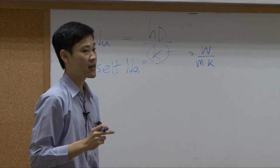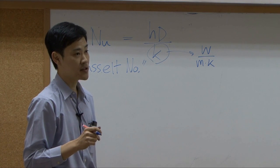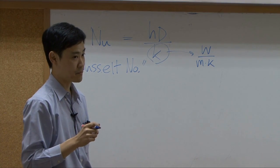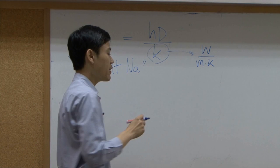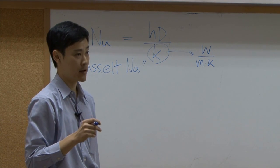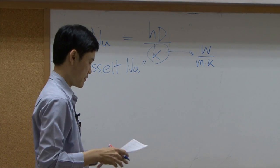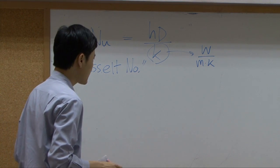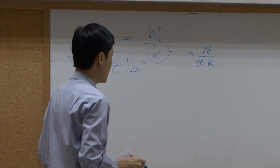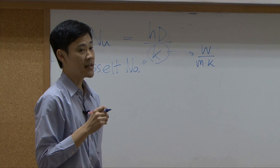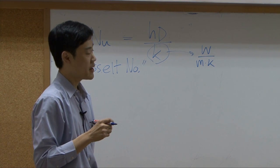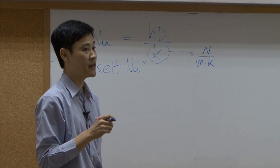D here is characteristic length of your system, of the particular system. K is thermal conductivity of the fluid. And Nusselt number can be derived based on specific problems.